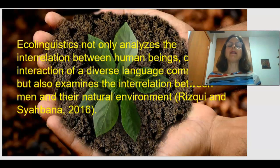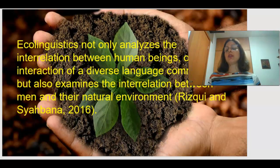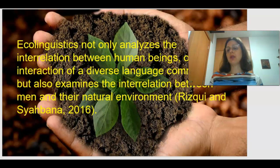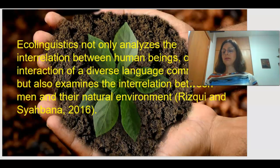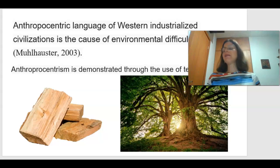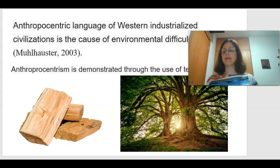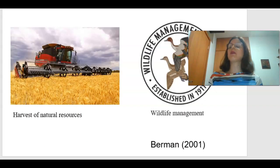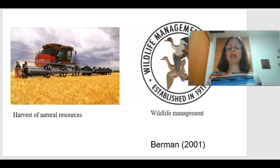Ecolinguistics not only analyzes the interaction between human beings or the interrelation of diverse language communities, but also examines the interaction between human beings and their natural environment. Anthropocentric language of Western industrialized civilization is the cause of environmental difficulties. This anthropocentric language is demonstrated through the use of terms such as 'wood' instead of 'trees,' and phrases such as 'harvest of natural resources' and 'wildlife management,' to demonstrate the exploitation of nature carried out by humans.